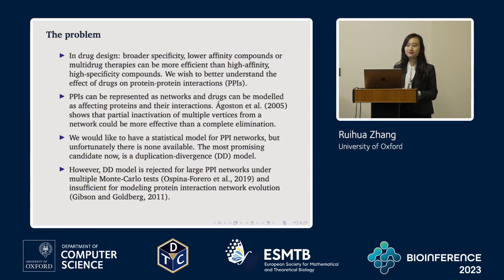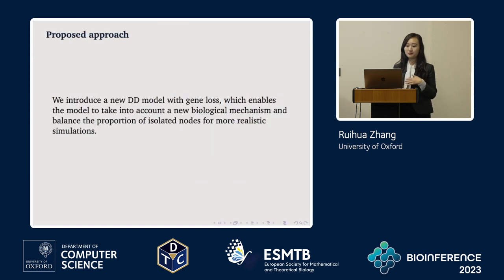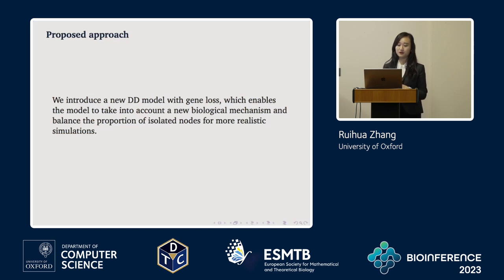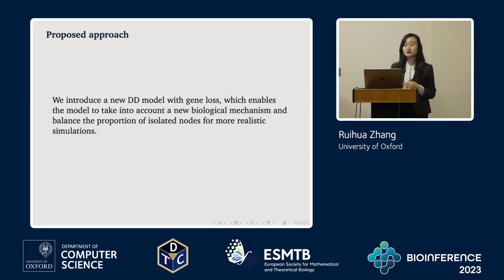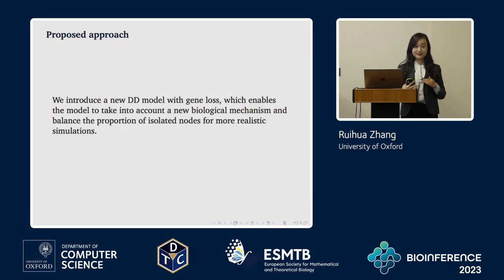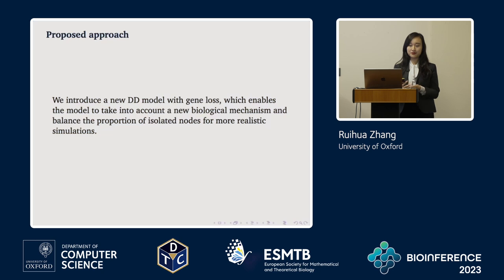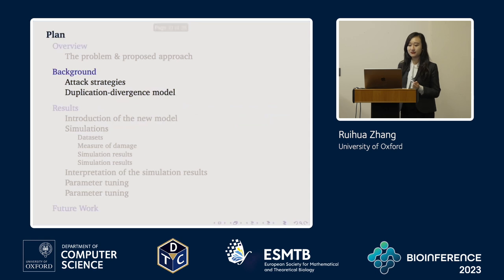Facing this problem, our group proposed a new duplication divergence model with gene loss. This enables the model to take into account gene loss as a biological mechanism and balance the proportion of isolated nodes for more realistic simulations. I'll discuss later why we focus particularly on the proportion of isolated nodes.